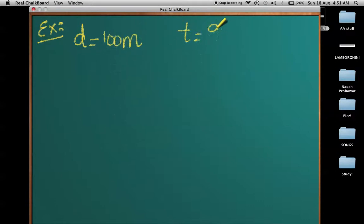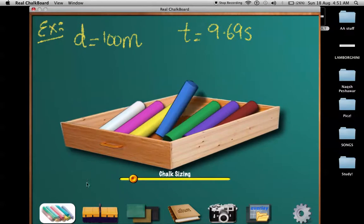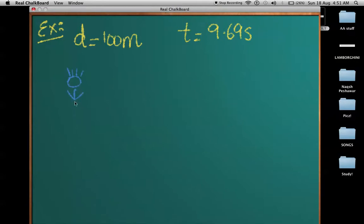So this is Usain here. Let's be intuitive. He covered this distance of 100 meters in simply 9.69 seconds.